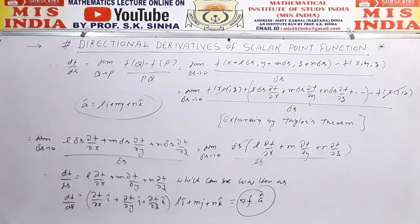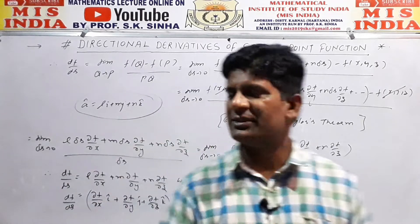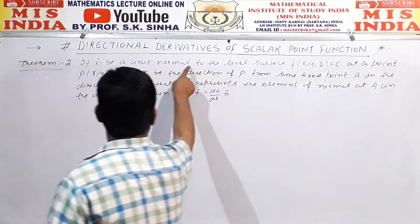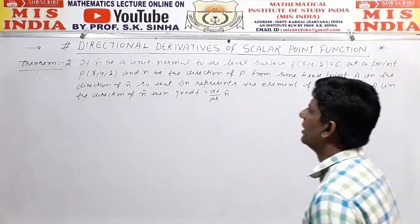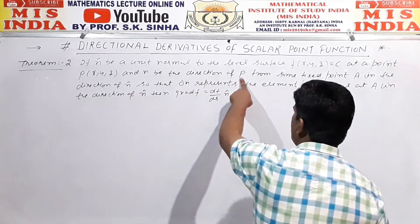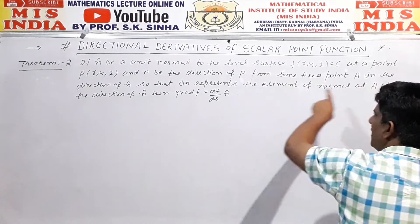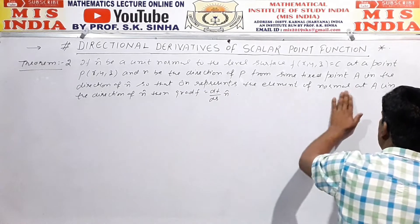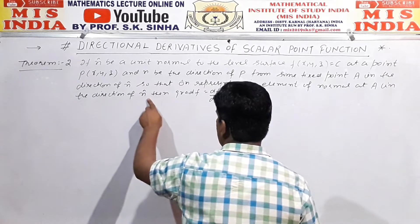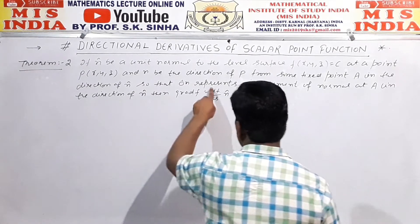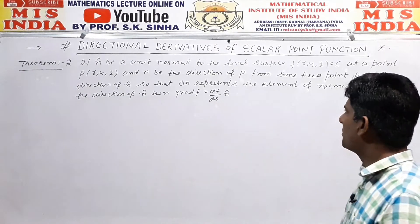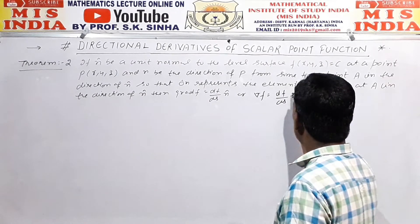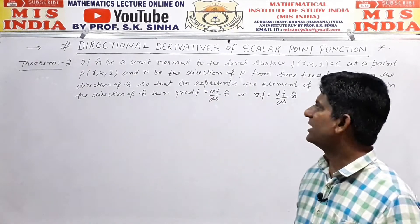So this was Theorem 1 from the directional derivative. Now let's do one more theorem. Theorem number two: if n̂ is a unit normal to the level surface f(x,y,z) = c at a point P(x,y,z), and n is the distance from some fixed point A in the direction of unit vector n̂, so that Δn represents the element of the normal at A in the direction of n̂, then the gradient ∇f = df/dn · n̂.